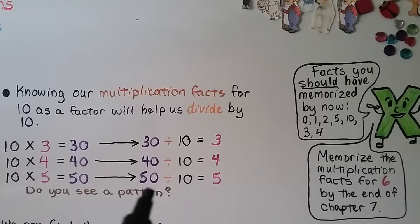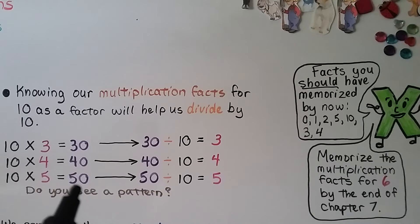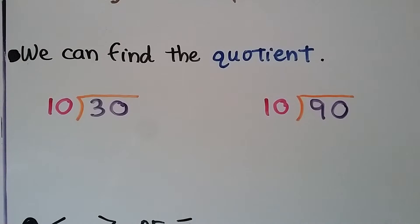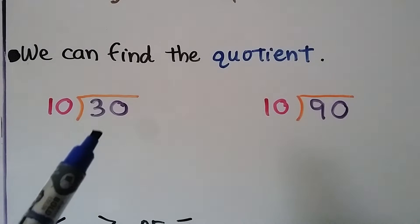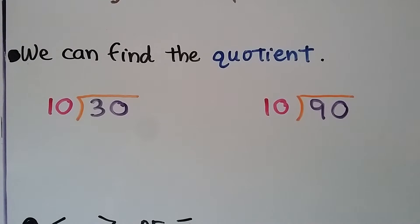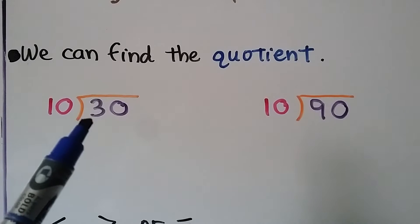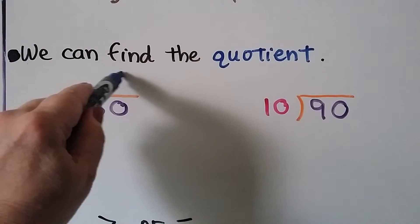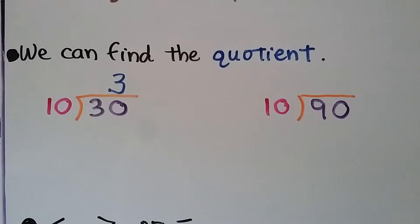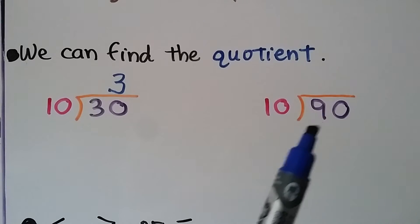In the related facts, we have a factor times a factor equals a product. The product is the dividend, the divisor is one of the factors, and the quotient is the other factor. For example, 30 divided by 10: how many tens can go into 30? I know 10 times 3 is 30, so the quotient is 3. For 90 divided by 10: how many tens fit into 90? I know 10 times 9 is 90, so 90 divided by 10 is 9.